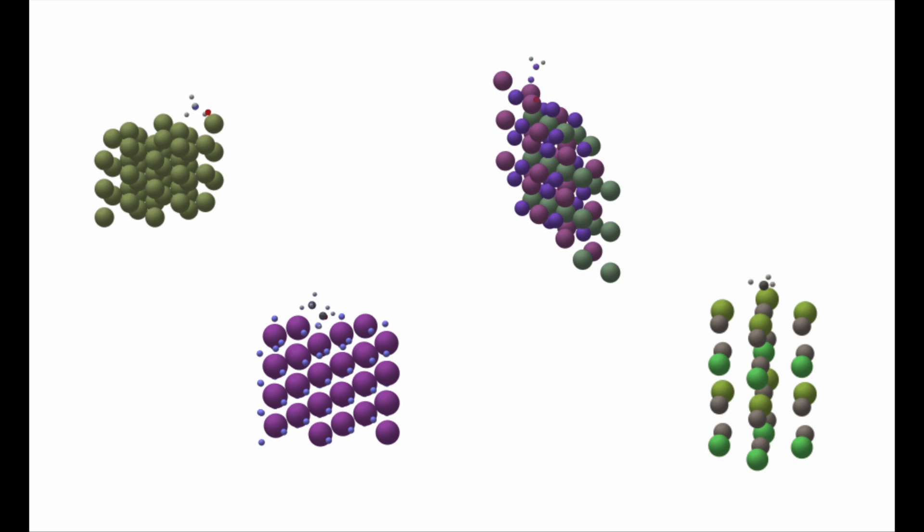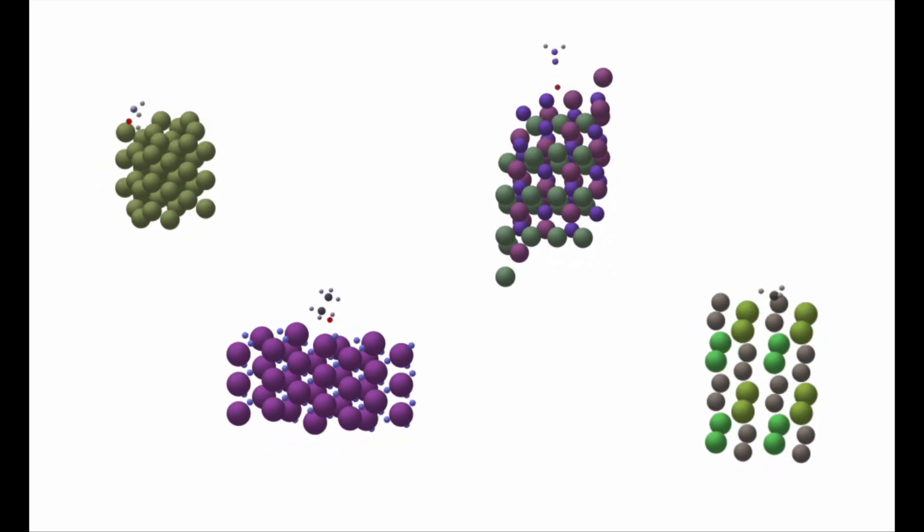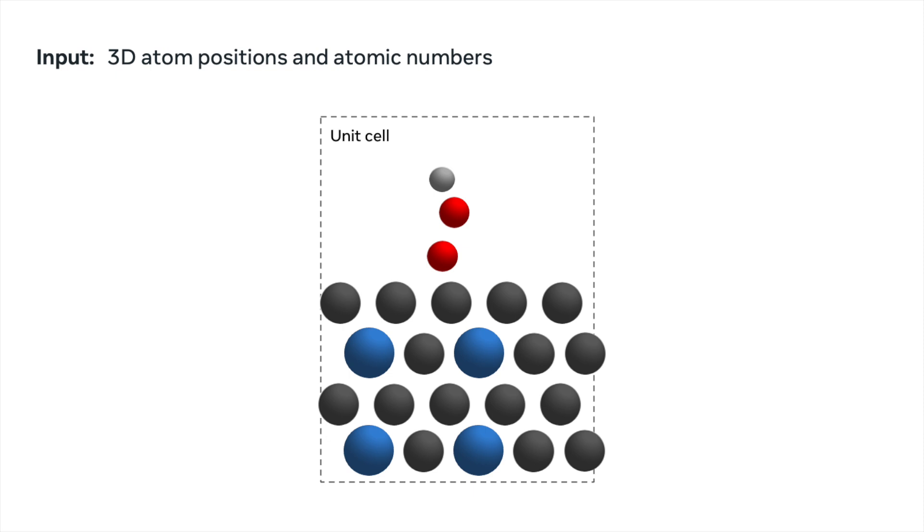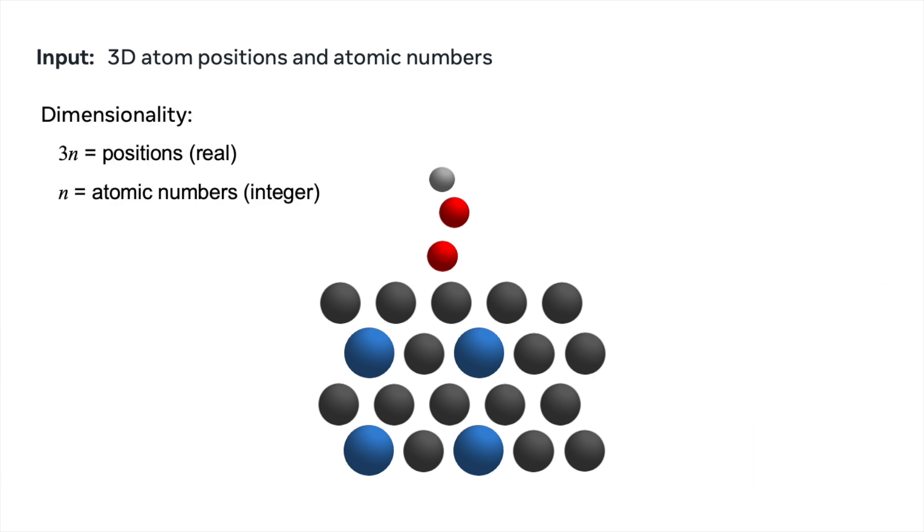So as we discussed in the previous video on catalysts, what we're looking at here is just a unit cell of atoms. A catalyst itself is actually a 2D surface. And what we do with the unit cell is we tile it in the x and y directions to then make basically a 2D surface that goes off into infinity. So if we look at the dimensionality of our inputs, for the positions of the atoms, we have each atom is going to be a three-dimensional x, y, z position, and it's going to be a real number. So the total number of positions is going to be 3 times n, where n is the number of atoms.